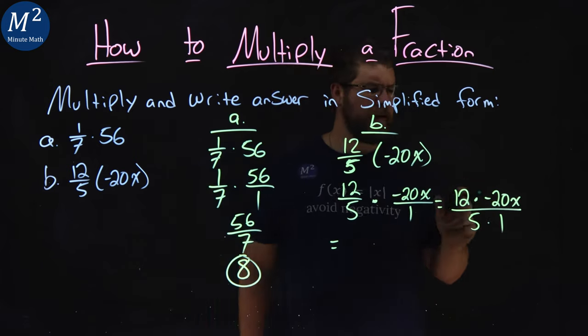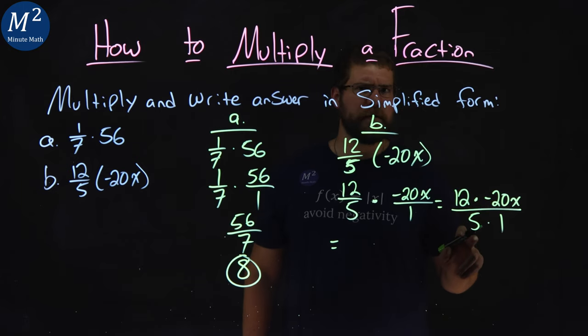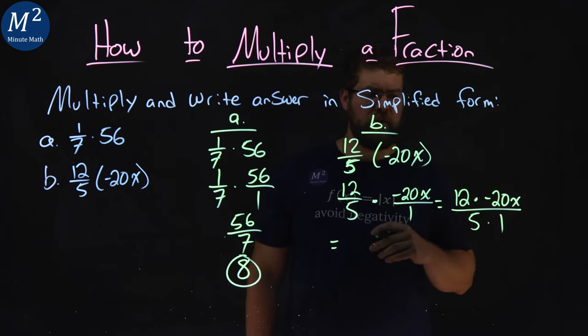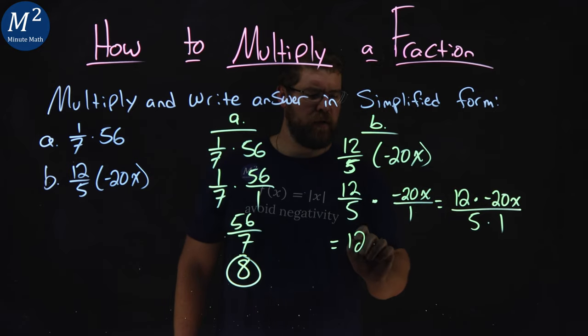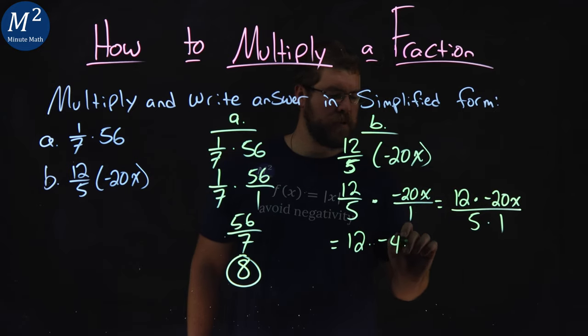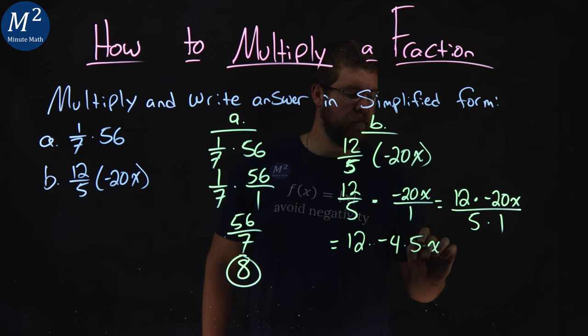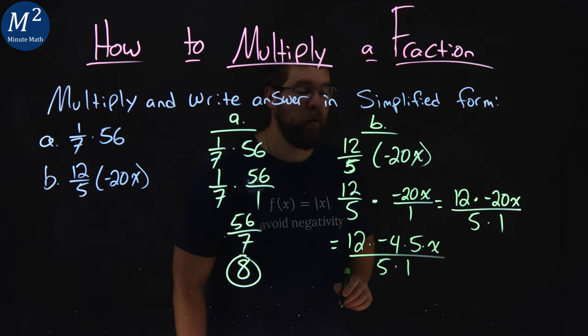What does that simplify to be? Well, 20, I know 5 goes into it, right? This 20 is 4 times 5. So let's rewrite that: 12 times negative 4 times 5 times x over 5 times 1.